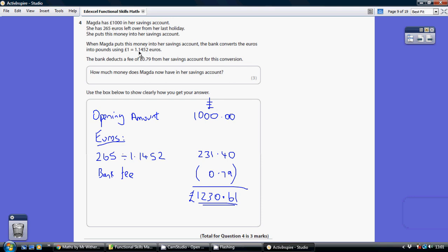We're going from this to this. So we're going to need to get a smaller number because that is smaller than that. So in order to get a smaller number, we're going to have to divide. That's why we do 265 divided by 1.145, which is £231.40.